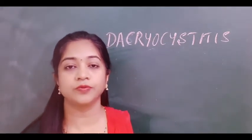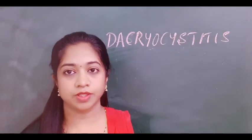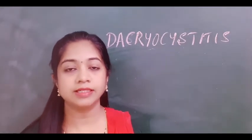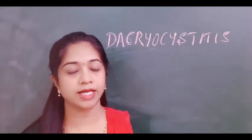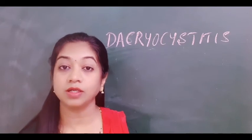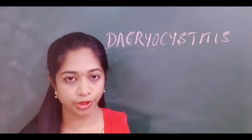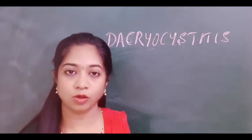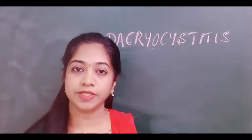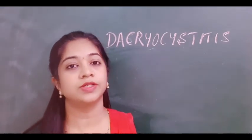Whenever a child presents with watering, it is a serious condition. The child could have congenital dacryocystitis, ophthalmia neonatorum, or even congenital glaucoma — these are the close differential diagnoses. Whenever you are examining a case of congenital dacryocystitis, always look at the conjunctiva and cornea for repeated infections which can occur because of dacryocystitis.